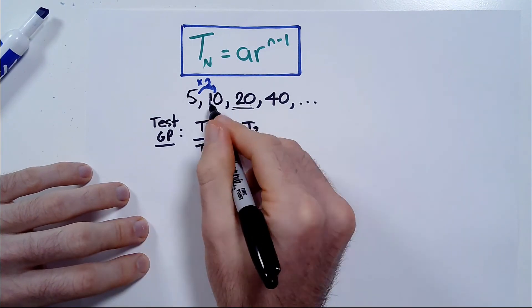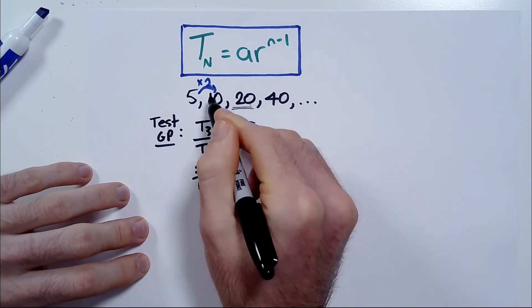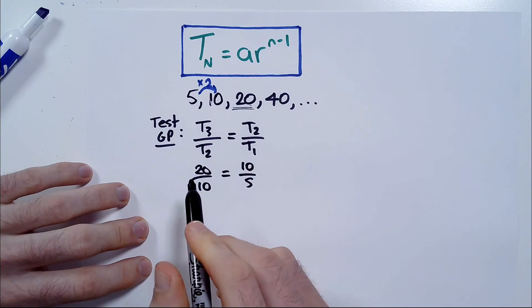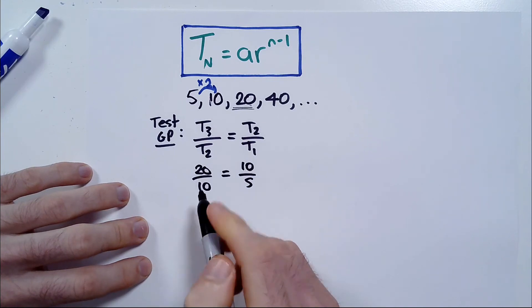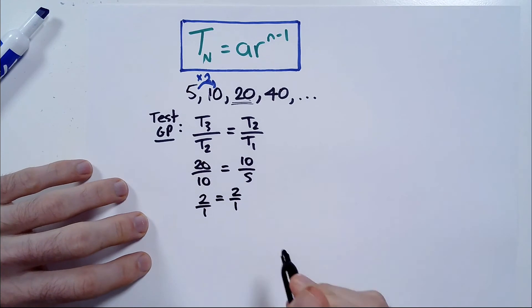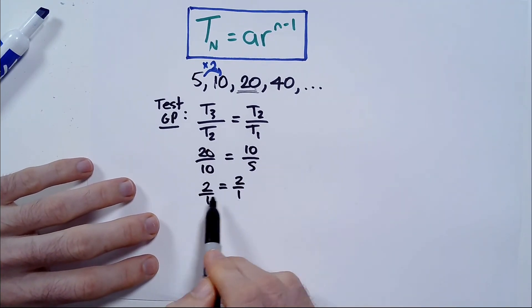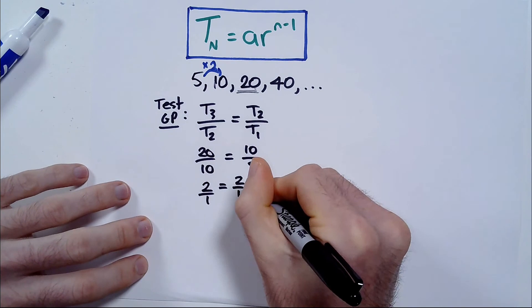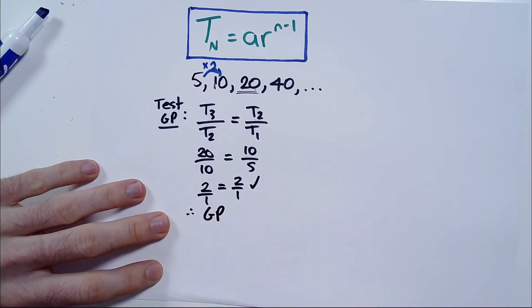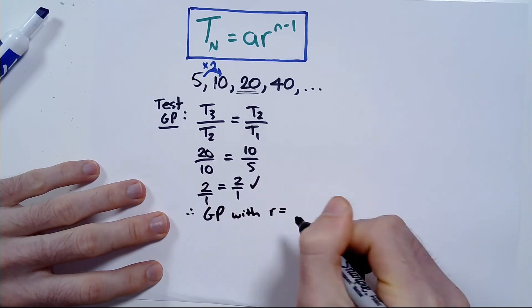So, what is 20 over 10? It is 2. And does that equal 10 over 5? Well, if you're good at quick maths here, 20 over 10 is 2 over 1, and 10 over 5 is 2 over 1, which of course can just be shortened to 2. And those sides are the same. The left side is the same as the right side. So, we give it the tick, and we say, yes, we have a GP with a ratio of 2.